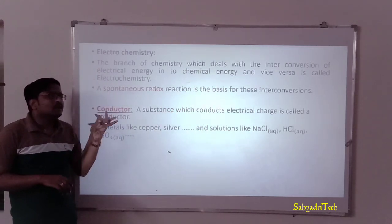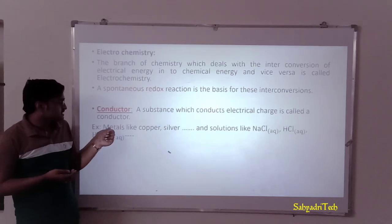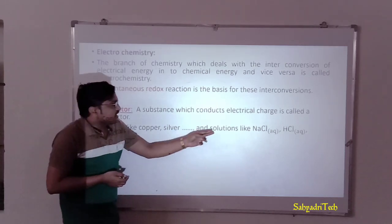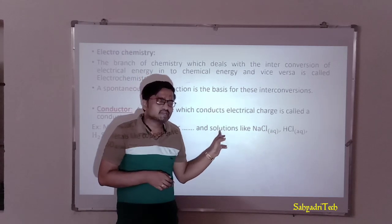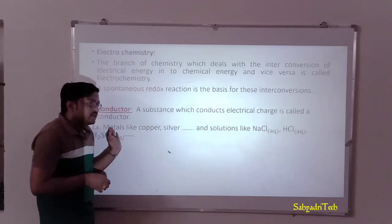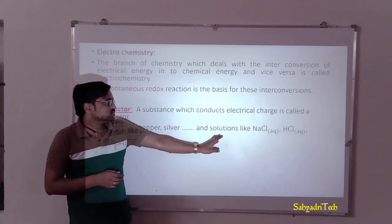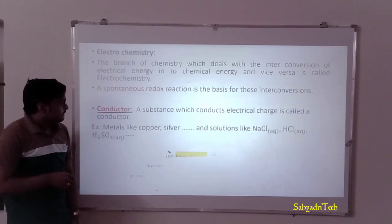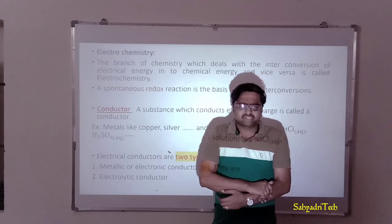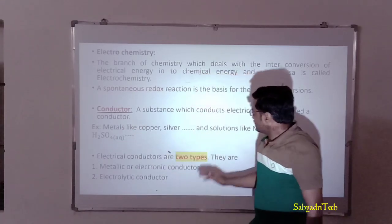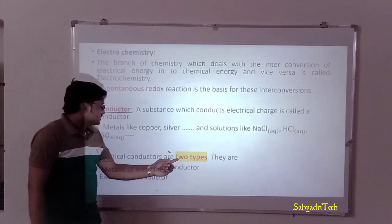Examples of conductors include all metals, which conduct electric charge. There are also electrolytic solutions, which also conduct electricity. When comparing the properties of metals with properties of these solutions, they are totally different. Based on their nature, conductors are of two types: metallic conductors, also named electronic conductors, and electrolytic conductors.